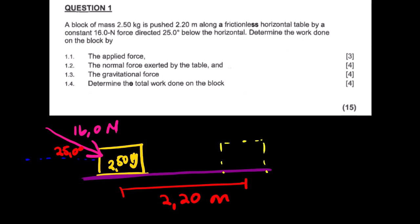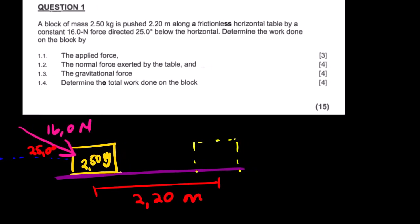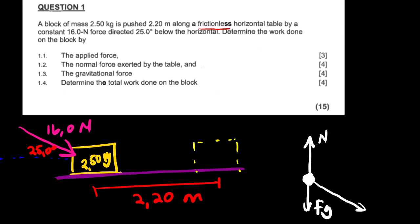This is the picture form. We can start by drawing the free body diagram just to make sure how many forces are acting on the block. Since the surface is frictionless, we don't have friction in this case. We have three forces: the normal force in this direction, Fg in this direction, and the applied force in this direction.